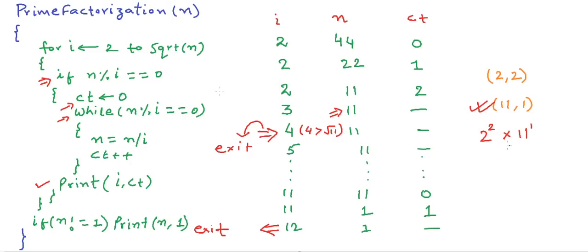The time complexity in this case: the for loop runs in the worst case close to square root of n times, and the while loop does not matter in the worst case. So the time taken is proportional to the square root of n — this is O(square root of n) in terms of time complexity.